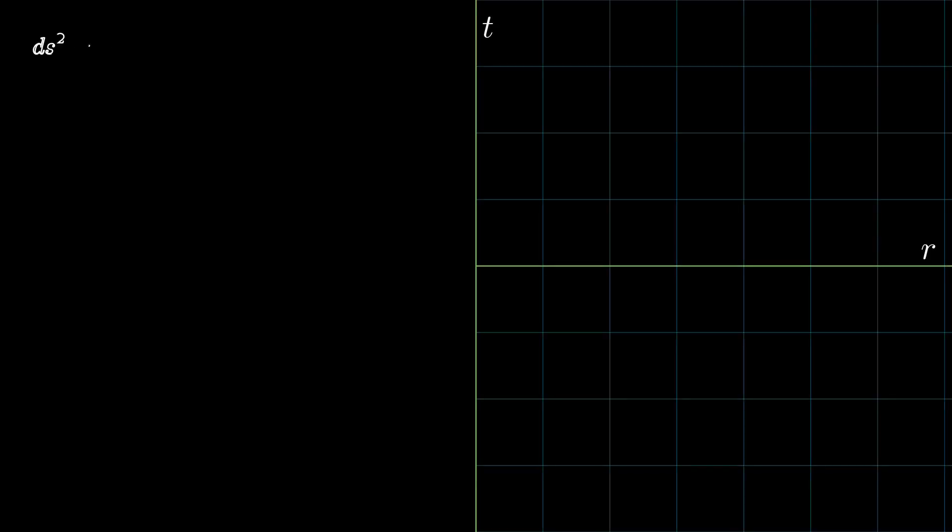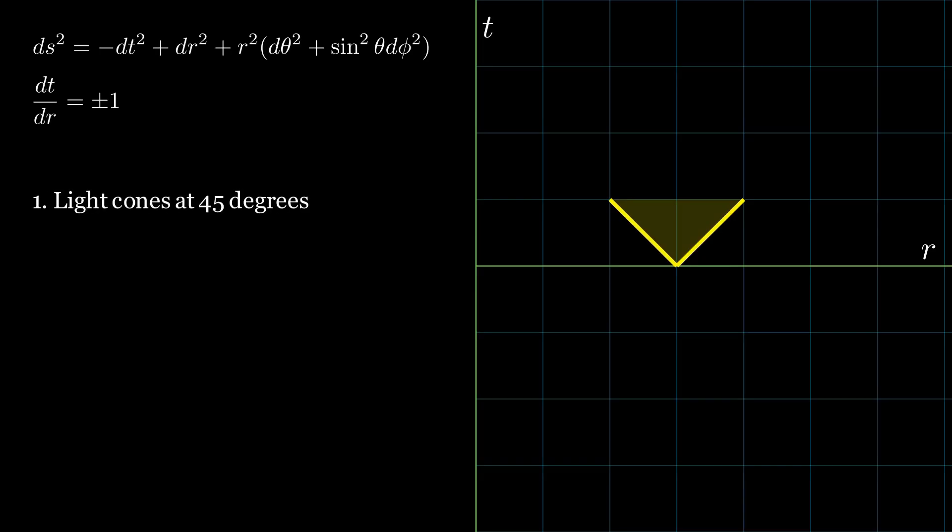If we return to our line element, we can compute dt over dr and see that the light cones are at 45 degrees everywhere. More information on light cones is in the video linked above. However, the time and radial axis go on forever. All of space is not in a finite boundary in our diagram.